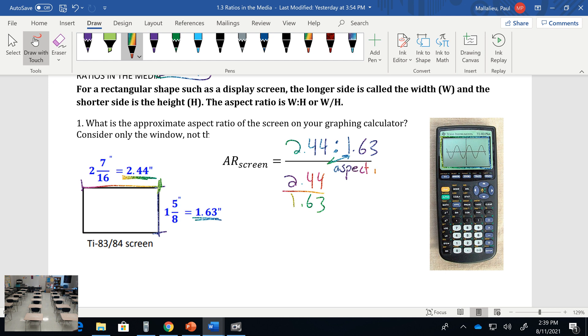Now if it asks for what's called the scale factor, that is just dividing this. If you take 2.44 and divide it by 1.63, it's going to give you 1.5. That would be your scale factor. Aspect ratio is setting it up as a ratio or a fraction. Scale factor is where they want to know what that specific number is.